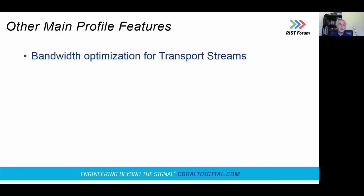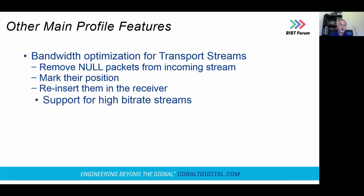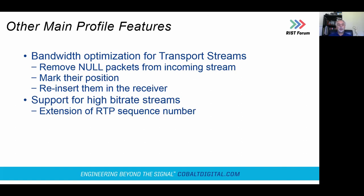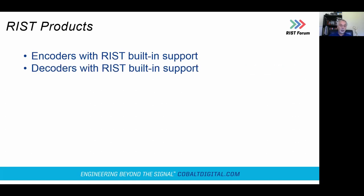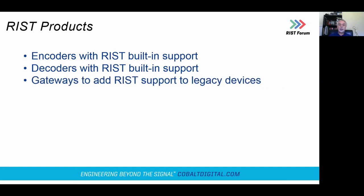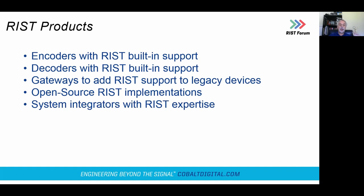Other Main Profile features include bandwidth optimization for transport streams — removing null packets, marking where they were, and reinserting them — and support for high bitrate streams via an extension of the RTP sequence number. In terms of the ecosystem, many vendors have encoders and decoders with built-in RIST support. You can buy gateways that add RIST support to legacy devices. There are open source RIST implementations if you want to integrate RIST into your own device, and there are system integrators with RIST expertise.